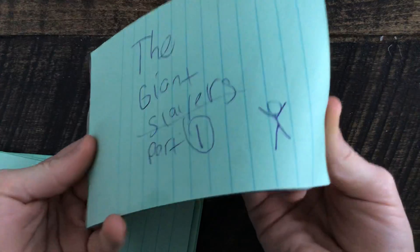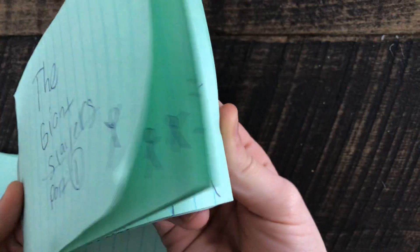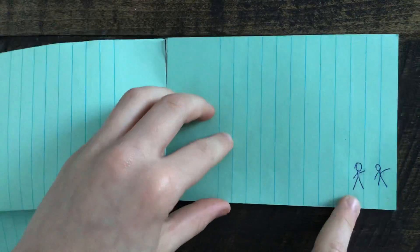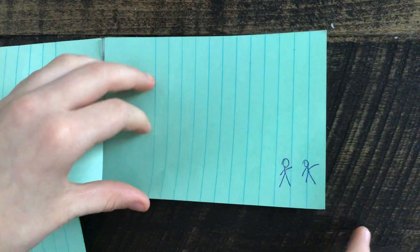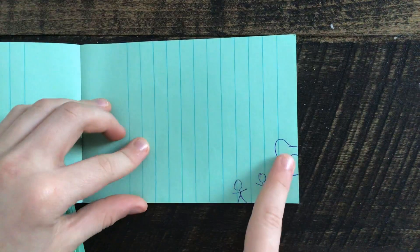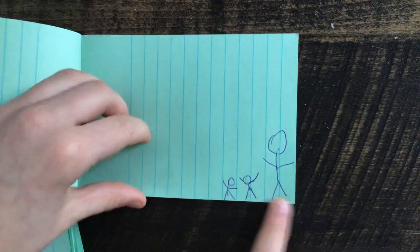Sorry for the background noise. So this is the Giant Slayers, part one. They're all pointing. Both of them are pointing to what? And then this is the Giant's head, and this is the Giant's foot. The Giant comes out.